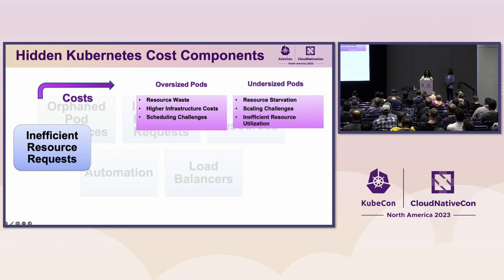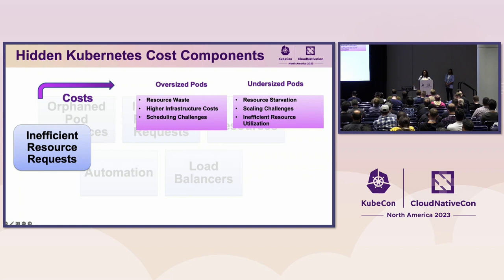Undersized pods don't have enough resources to run your workloads efficiently, which leads to performance issues, crashes, and slow response times for your applications. They may also not be able to scale horizontally because they are resource-constrained.